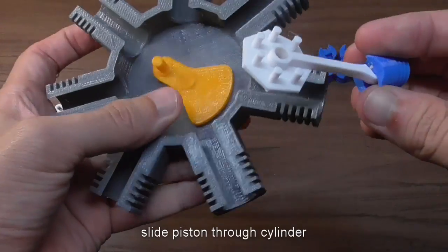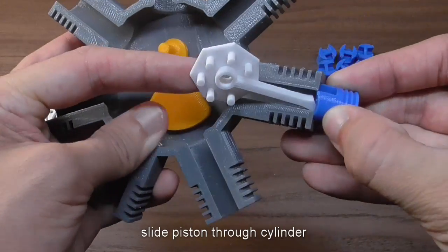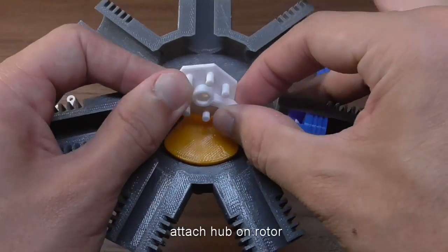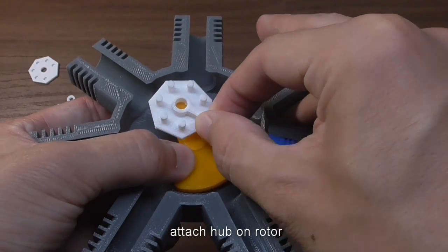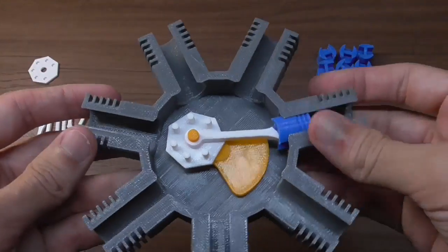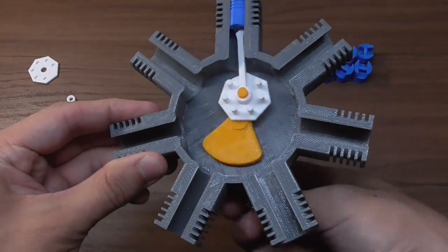Slide the piston through the cylinder and turn the hub so that the hub attaches to the rotor. Now you have one piston moving.